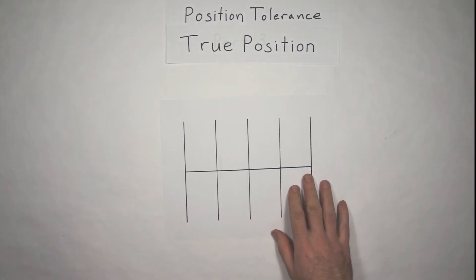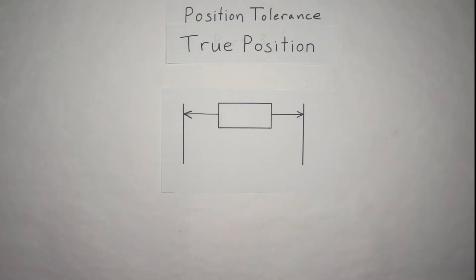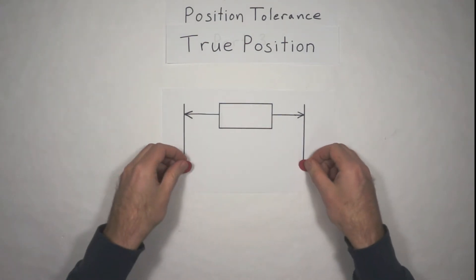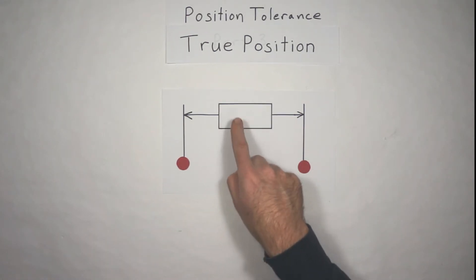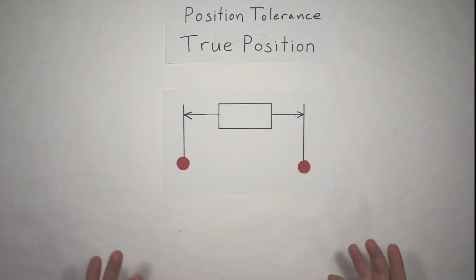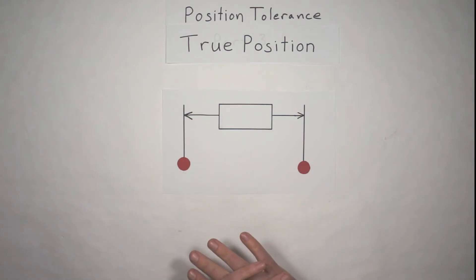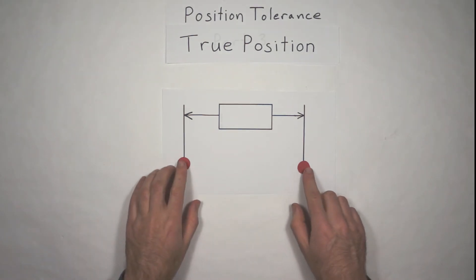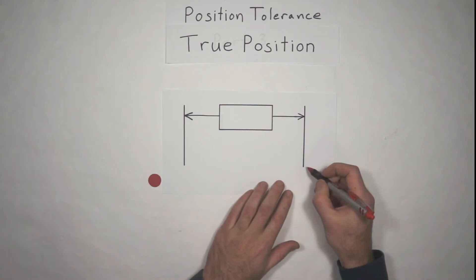Typically in manufacturing, we're going to define hole locations with what's called a basic dimension. And you know it's a basic dimension when it has a box drawn around it. And that is exact. I can't tell you how many times that I've seen a drawing where the engineer, drafter, whatever, put a basic dimension on something and then there was no tolerance specified.